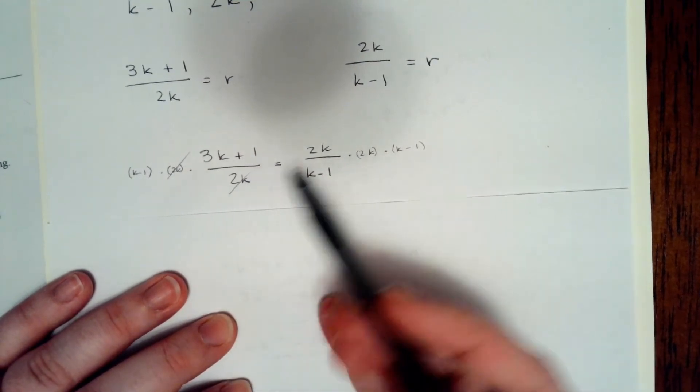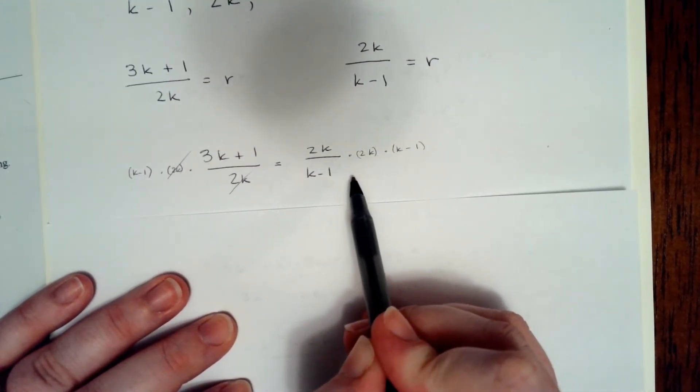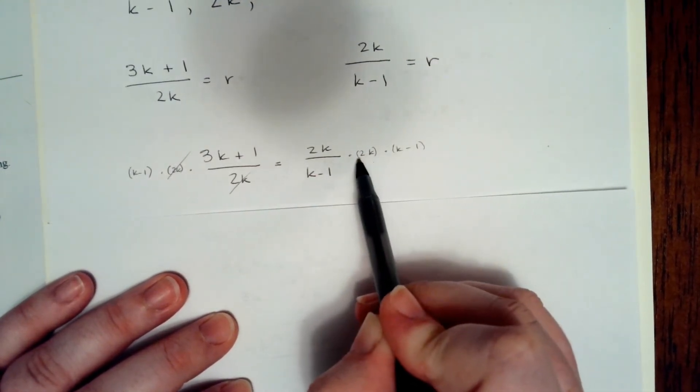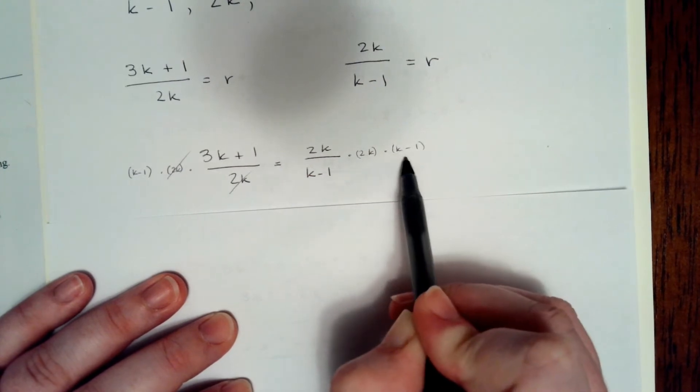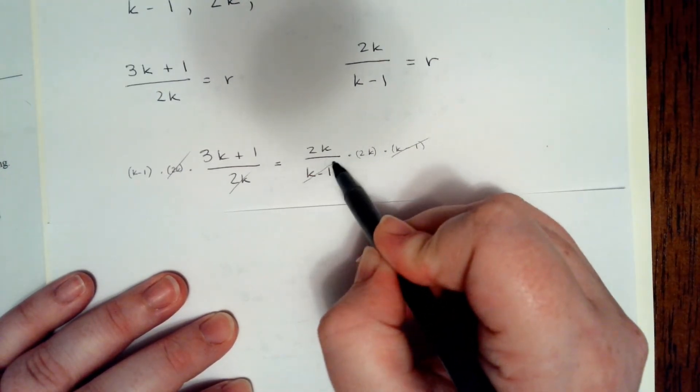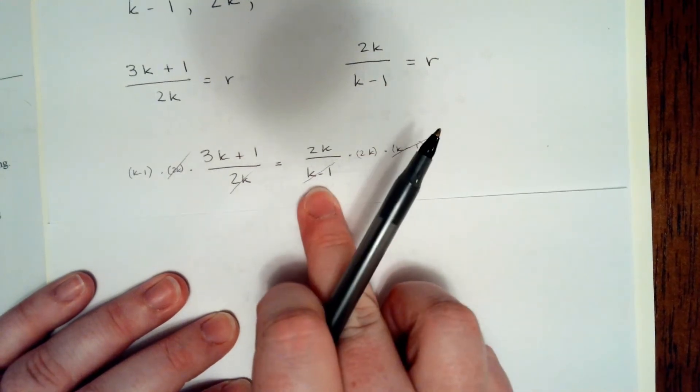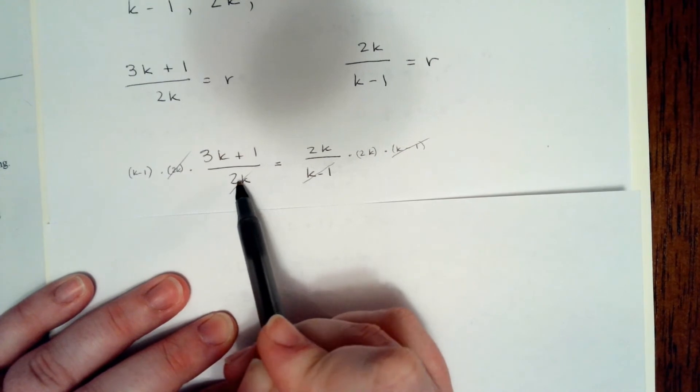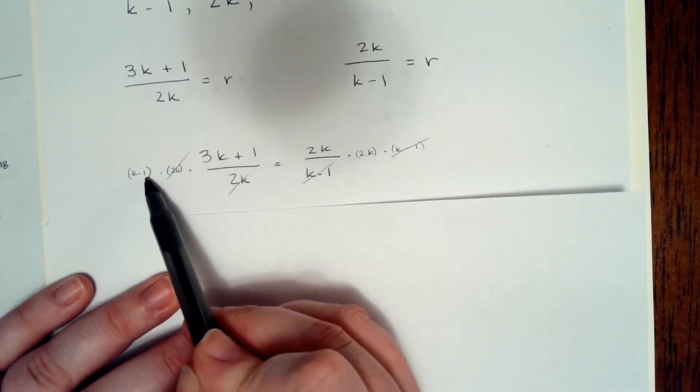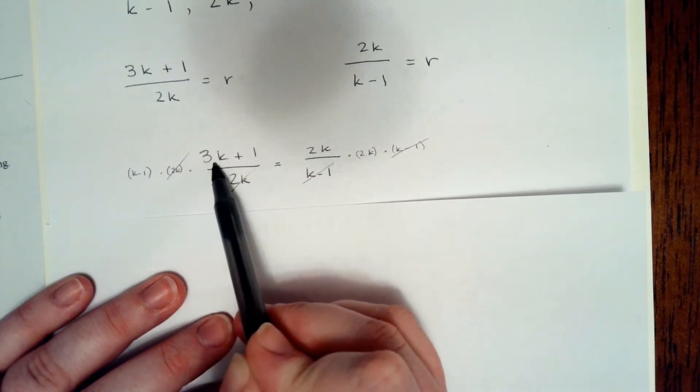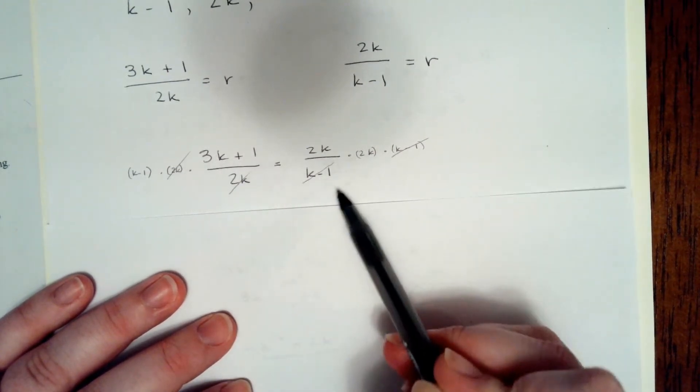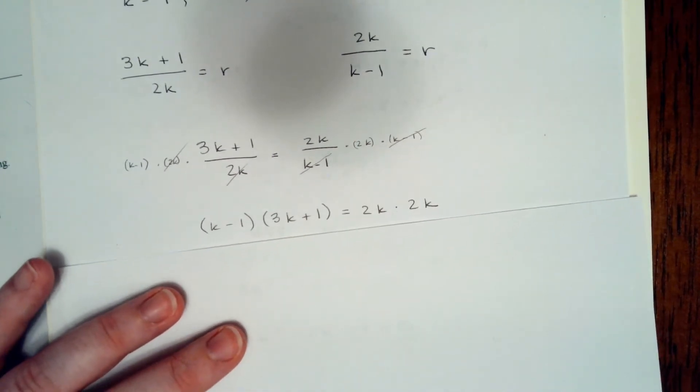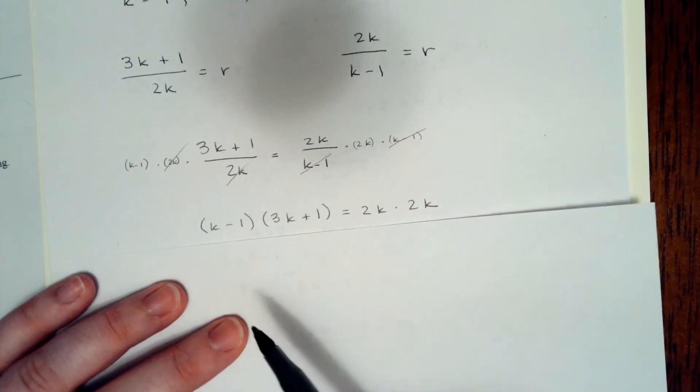Now, we need to simplify this. I combined two steps into one, just for simplicity. So I multiplied both sides by both 2k and k minus 1, which those terms do cancel with the respective denominator of each side. So in essence, what we're really saying is k minus 1 times 3k plus 1 equals 2k times 2k. That's exactly what I wrote in this next step.